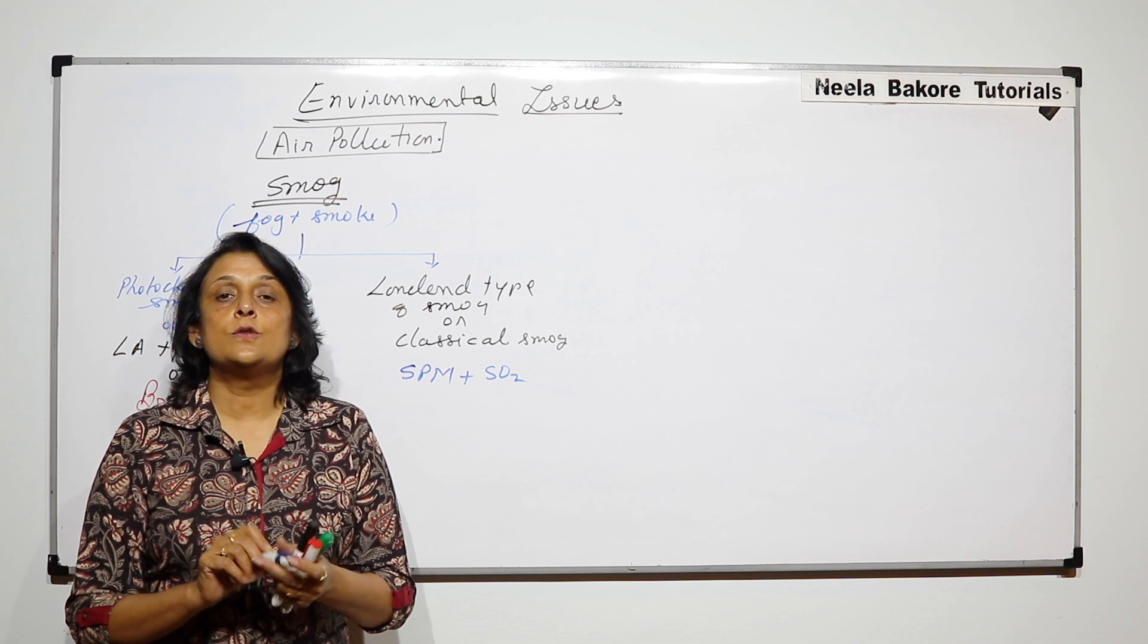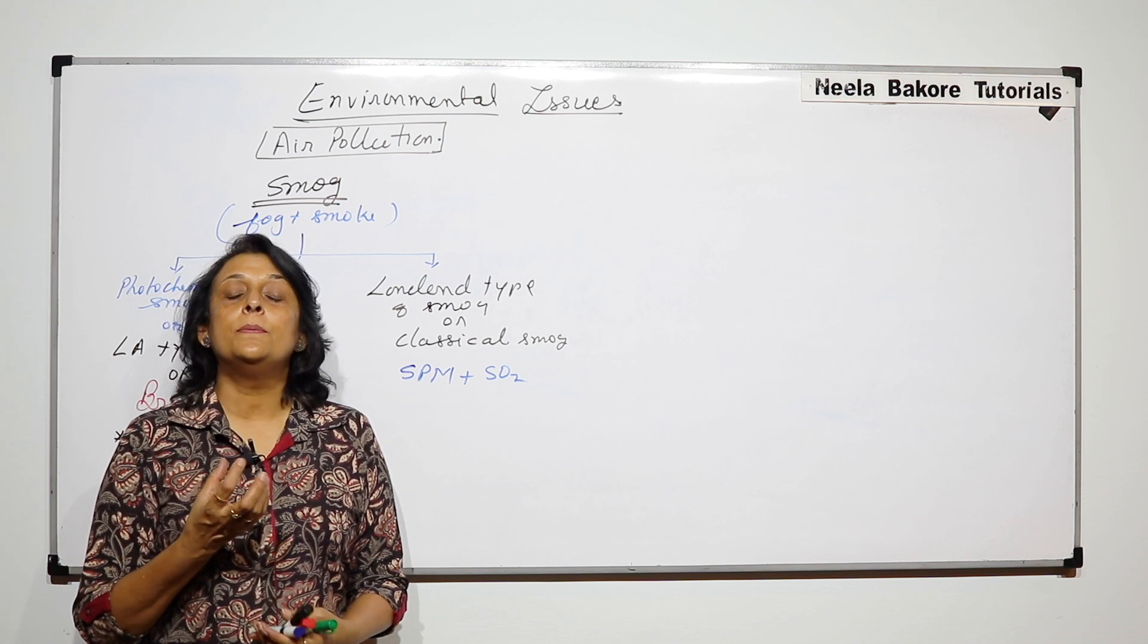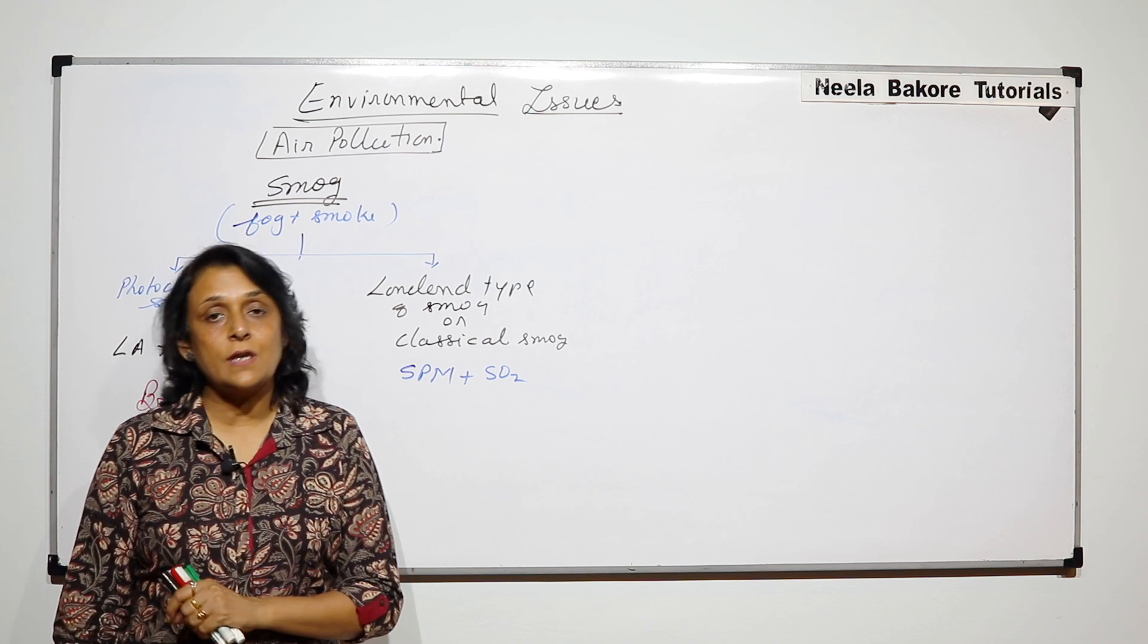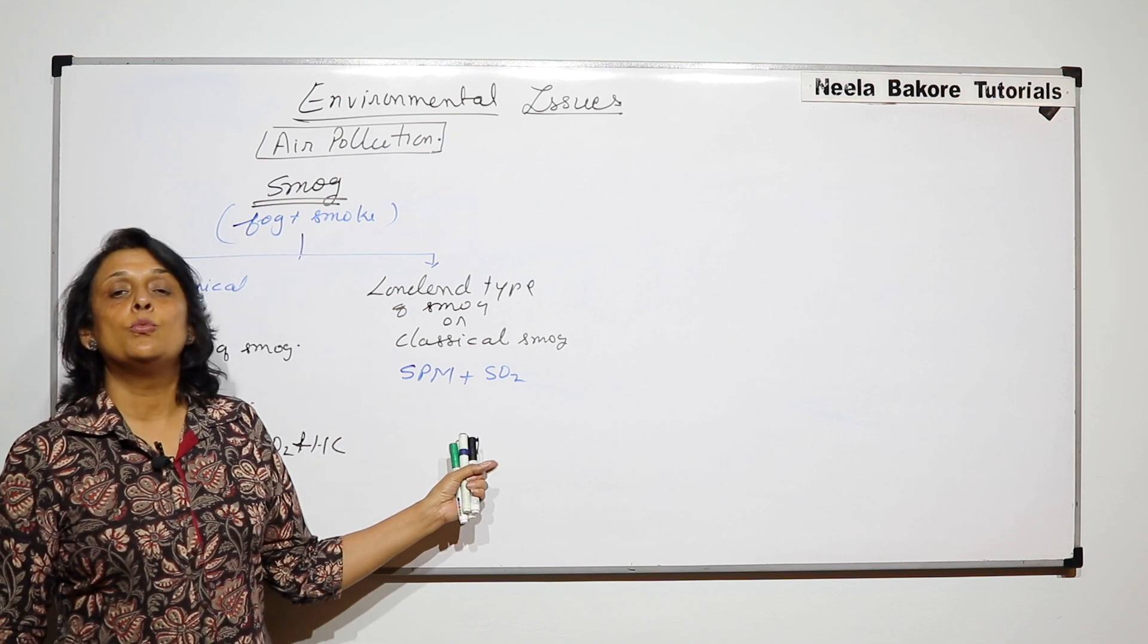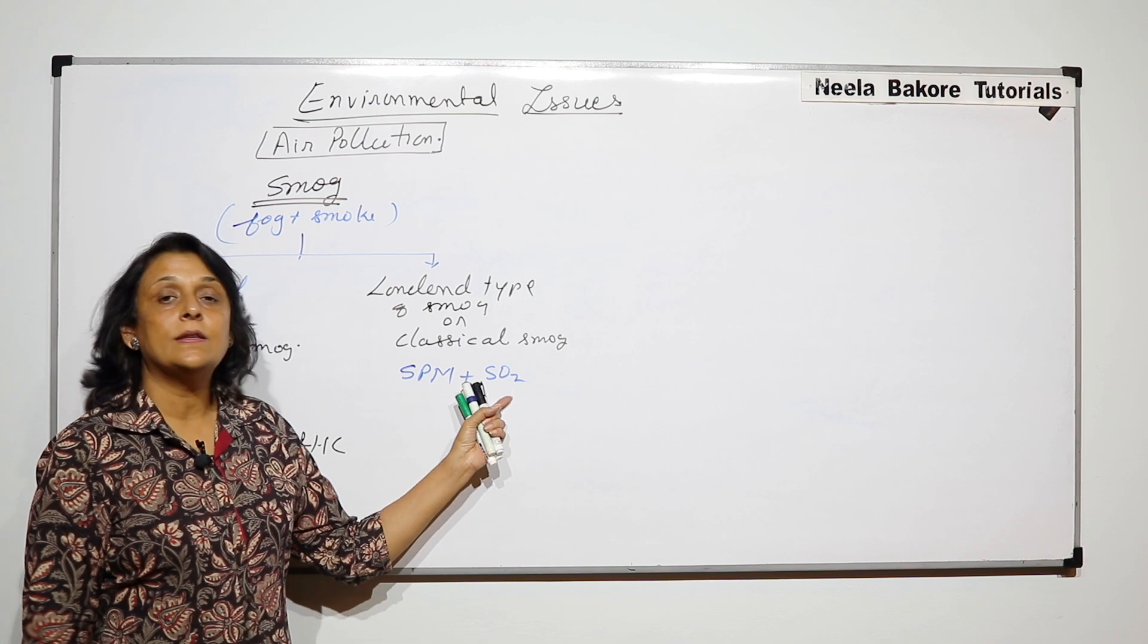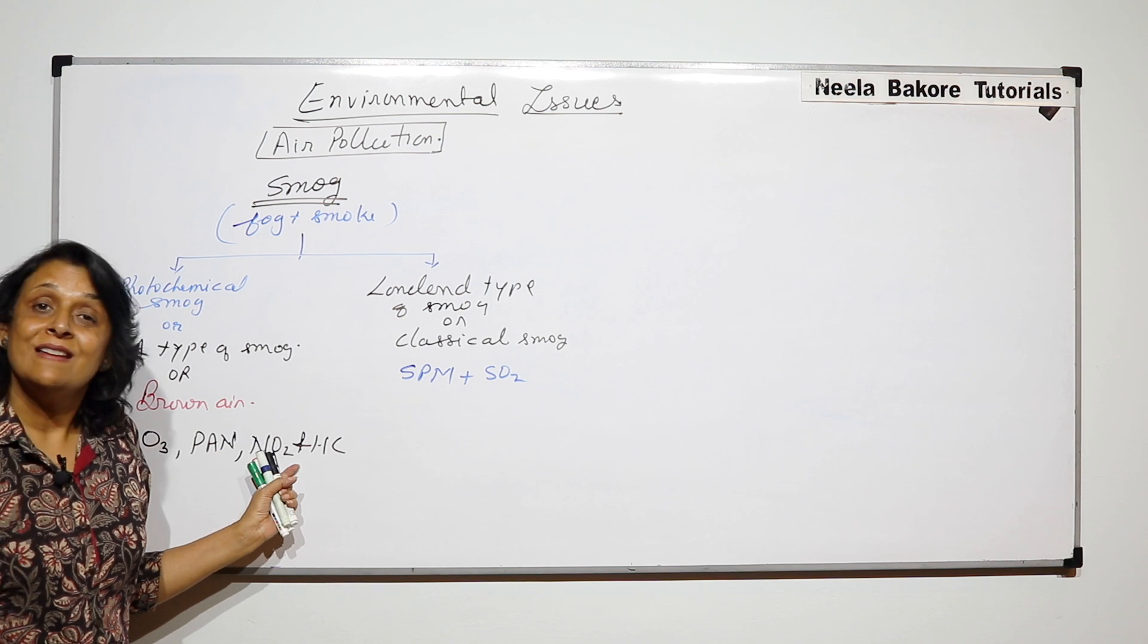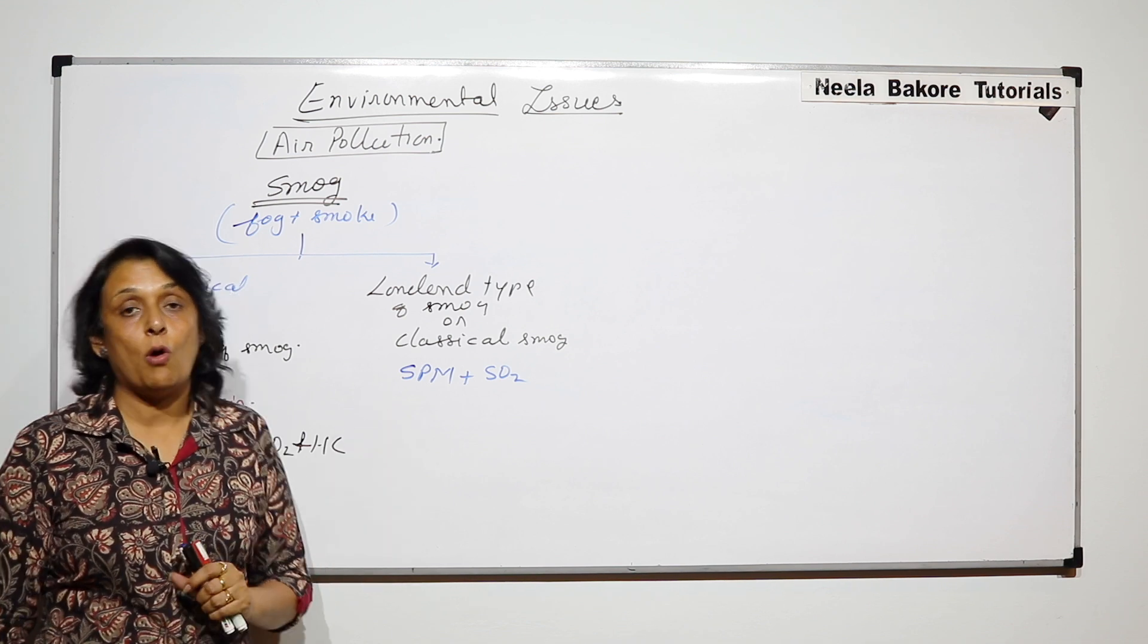The questions which are asked are on the basis of composition: if a smog contains oxides of sulfur, then it is which kind of smog? So here there are oxides of sulfur and in this type there are oxides of nitrogen. So these are the two types of smog.